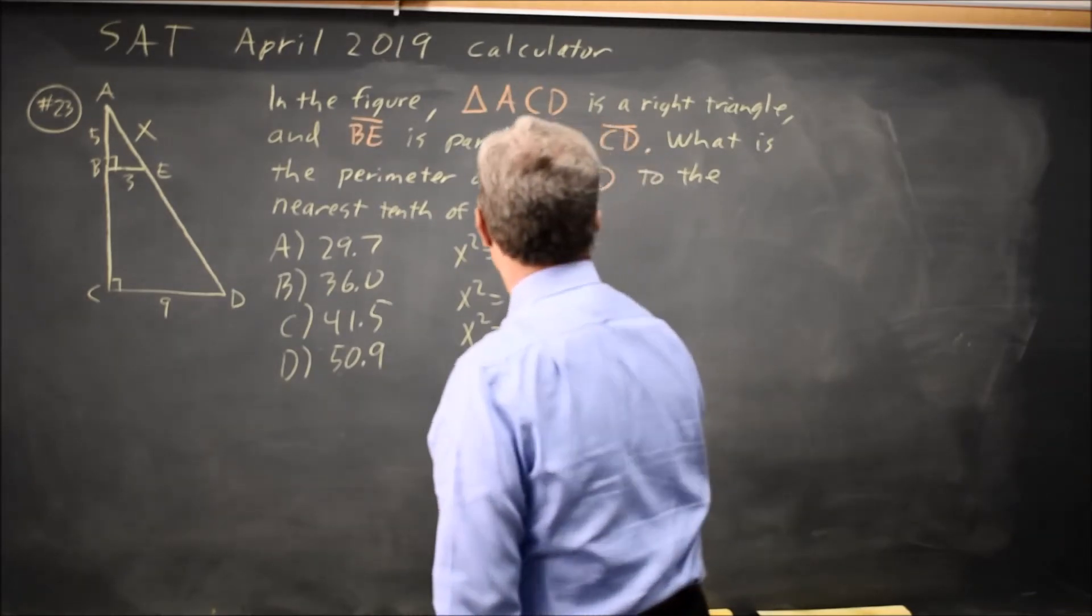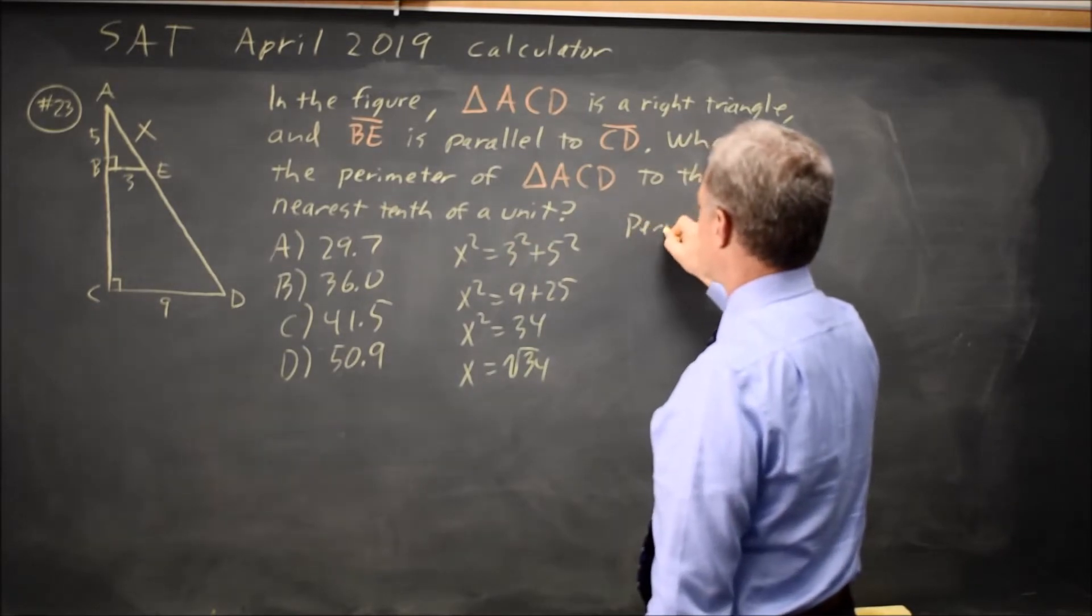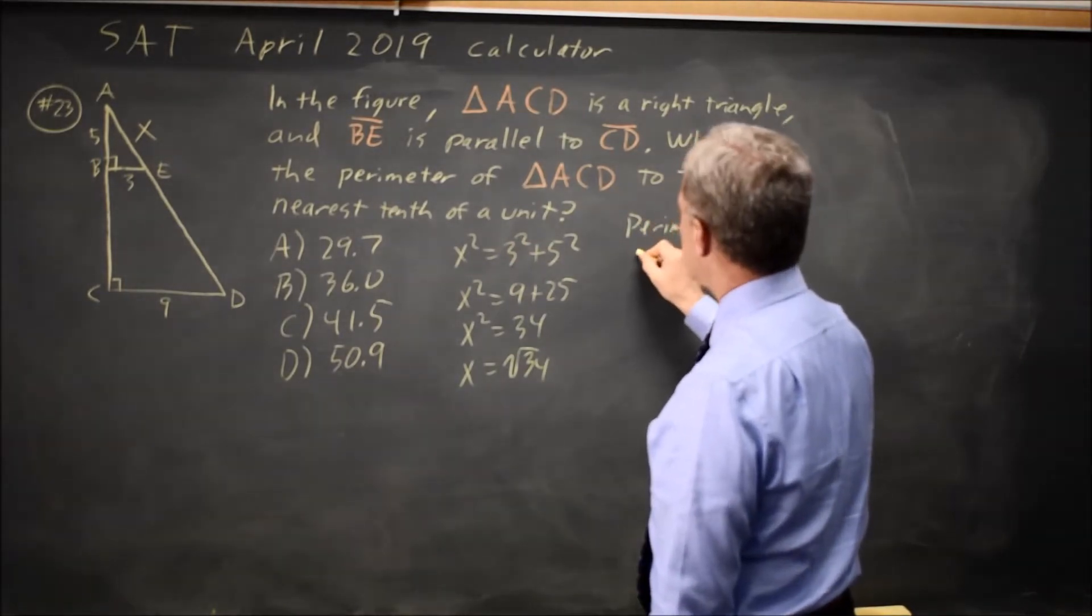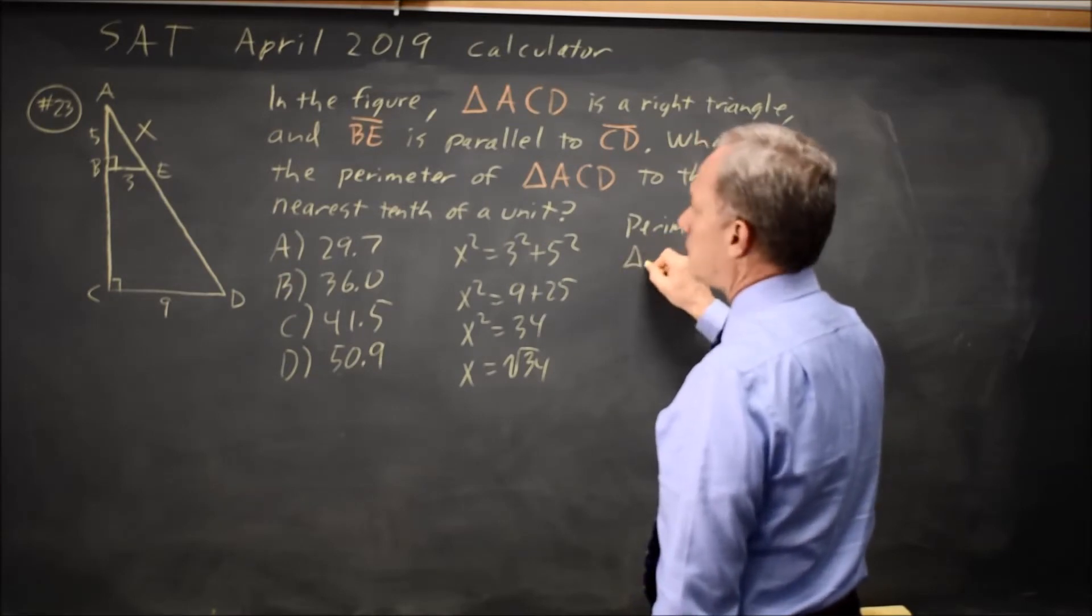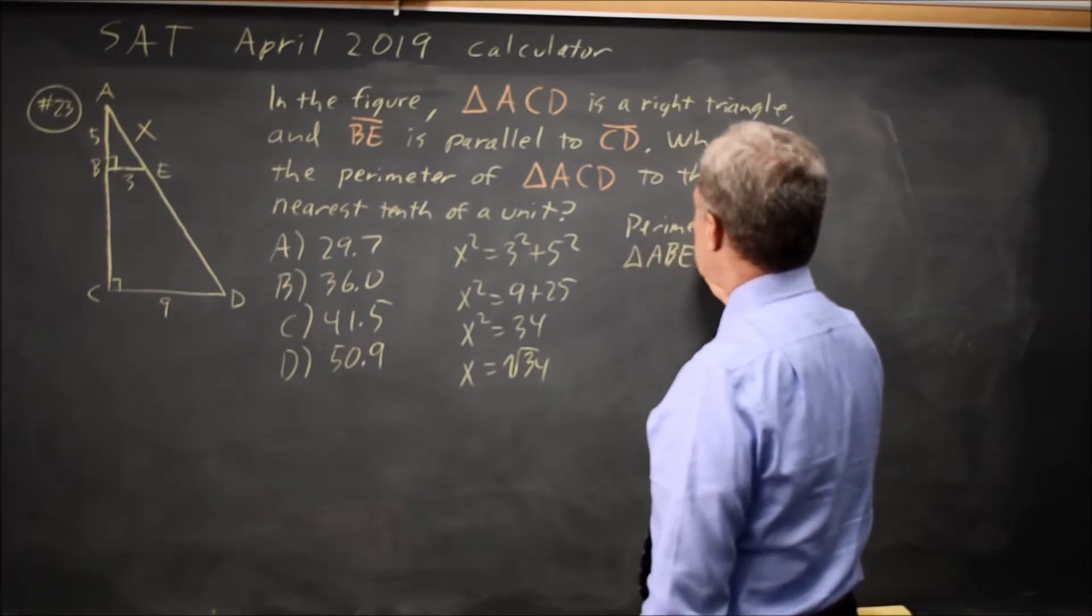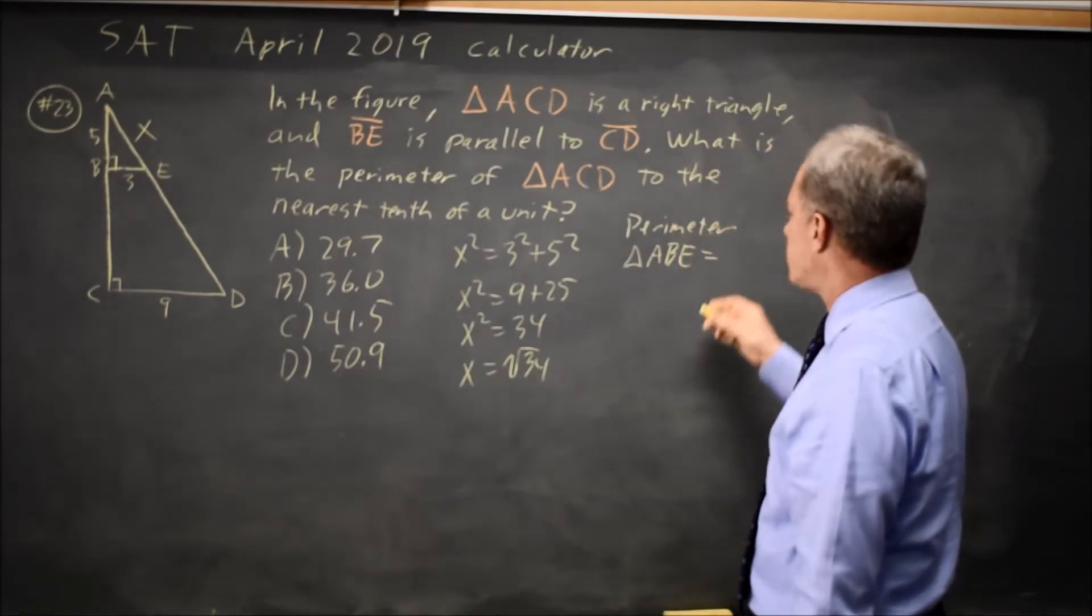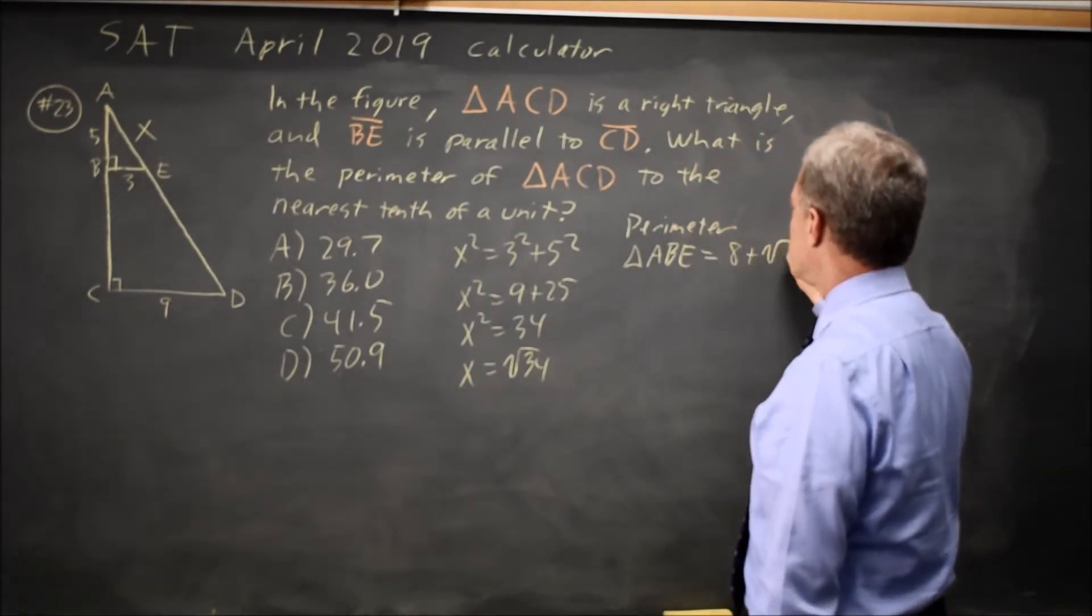The perimeter of the smaller triangle ABE is the sum of the three sides: 3 plus 5 plus root 34 is 8 plus root 34.